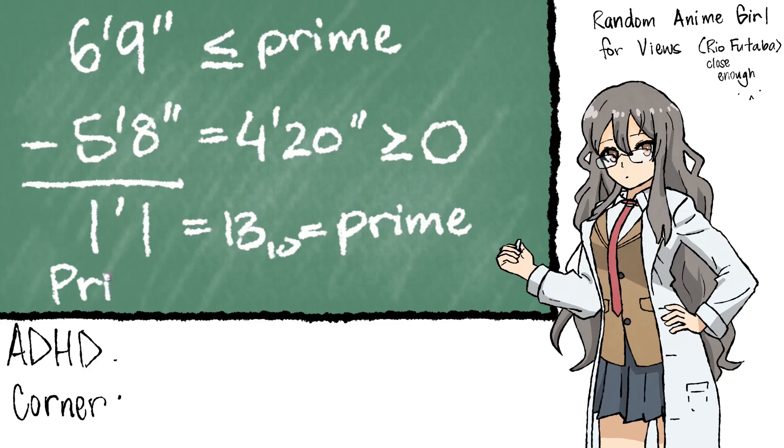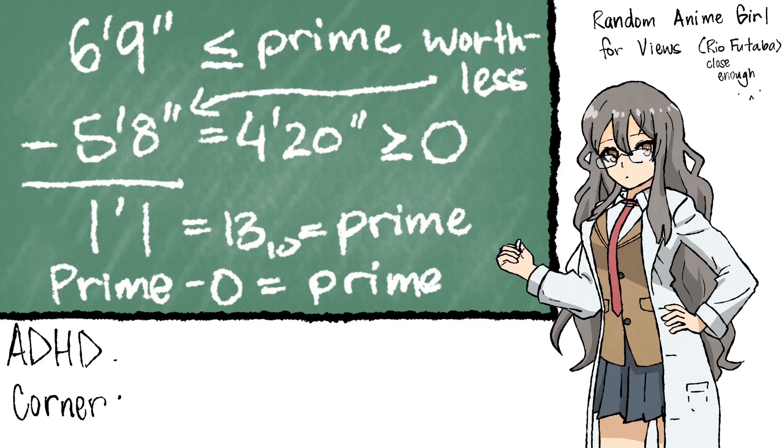If you're bad, you just have 0 skill, not negative. The only combination of values that satisfies the equality is 6'9" equals prime, and 5'8" is worthless, or equal to 0. Which makes sense, because guys under 6' are apparently not worth dating, or some other bad joke.